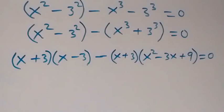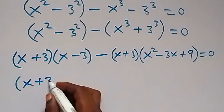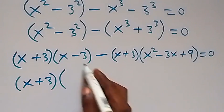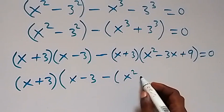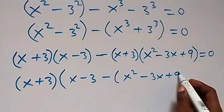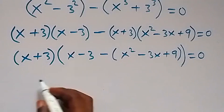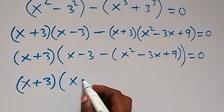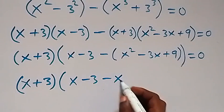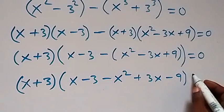Then in the next step we have (x + 3) common. Let's factor it out, and that will give us (x + 3) times the bracket: x minus 3 minus (x squared minus 3x plus 9) equals 0.